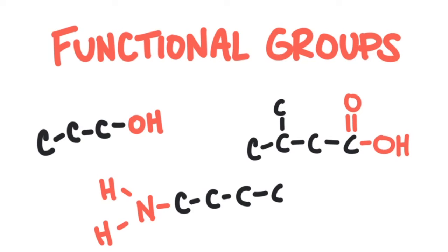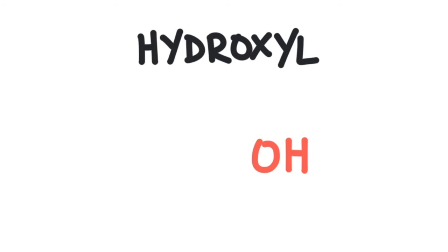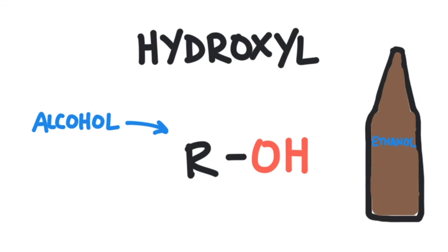There are five major types of functional groups found on the molecules of living things. Since the carbon chain isn't really important in identifying the group, we use the symbol R in place of writing out the entire carbon chain. The first functional group is the hydroxyl group. This group consists of a hydrogen atom bonded to an oxygen atom, which is then attached to the carbon chain. Compounds that have a hydroxyl group are known as alcohols — ethanol, the type of alcohol people consume, is an example.